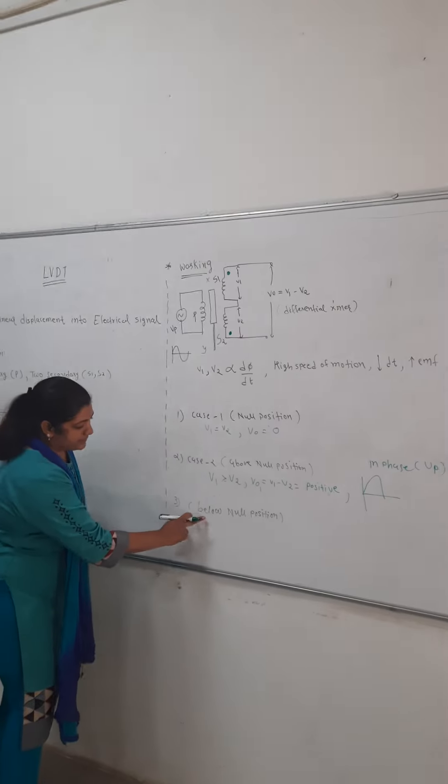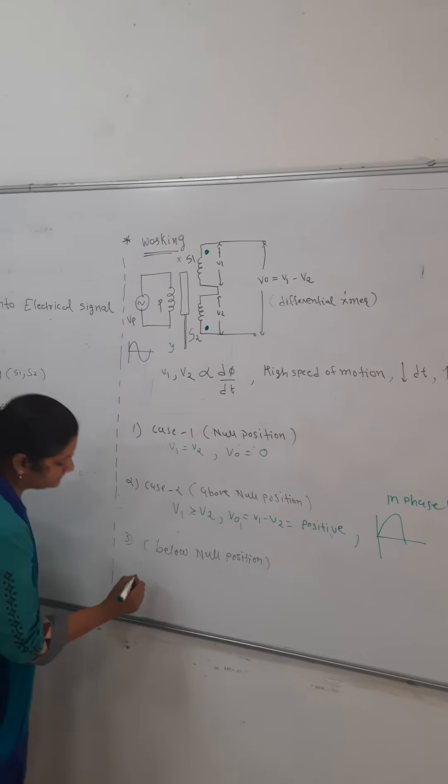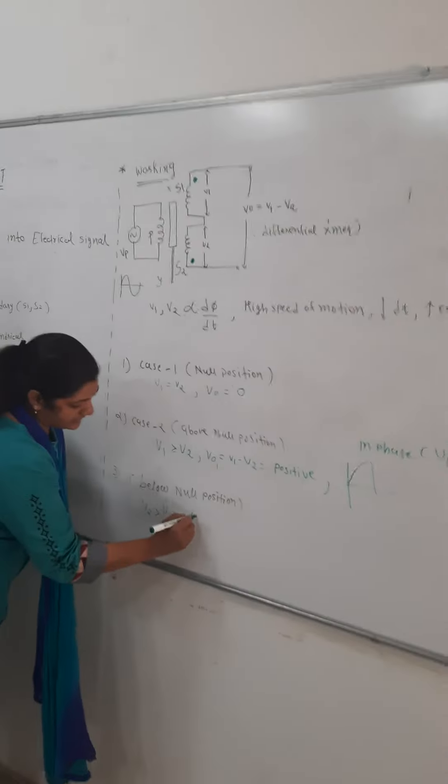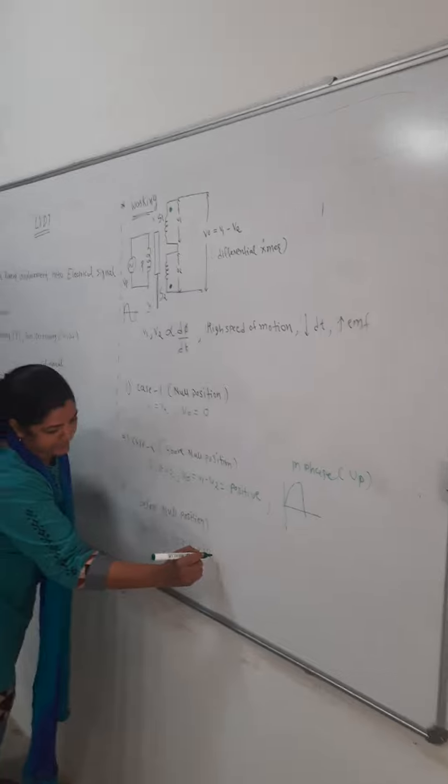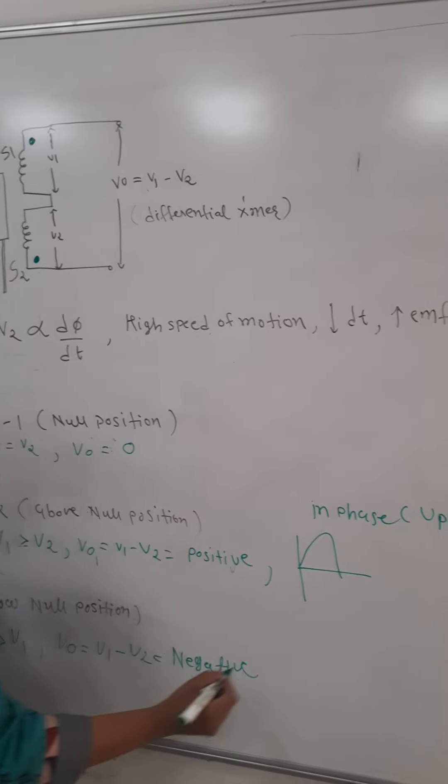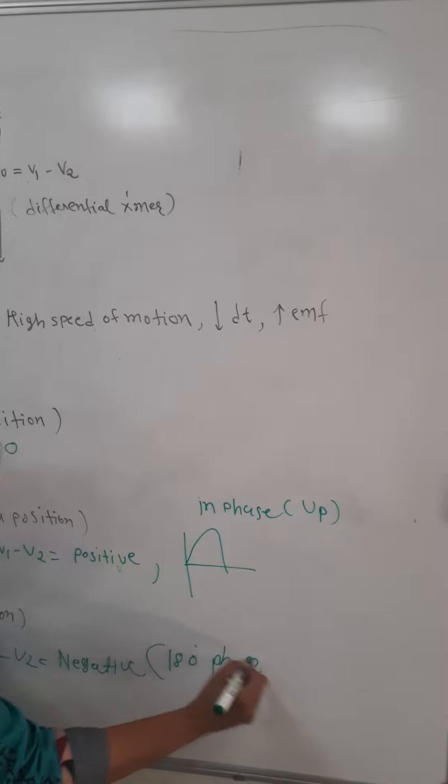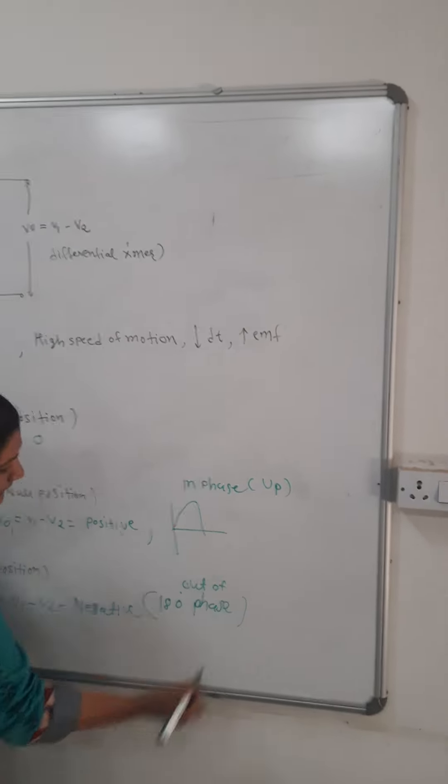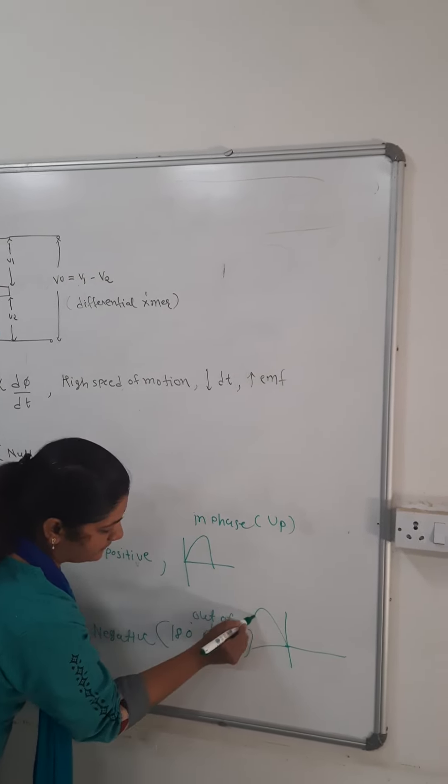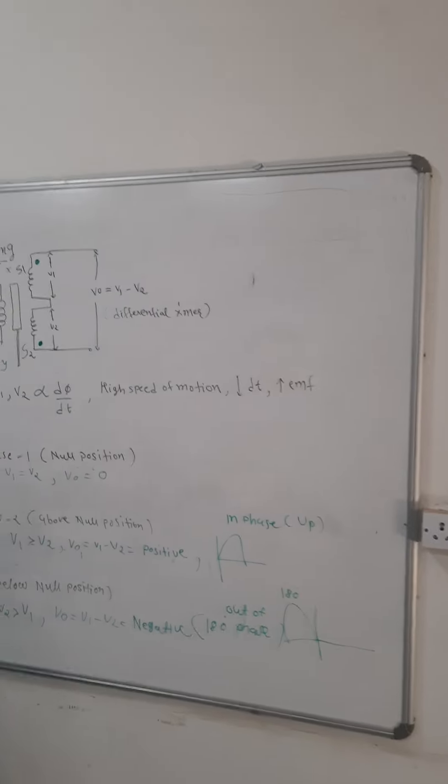Now, consider another case below null position. You can imagine that now the core is downside of the null. Same like the previous one. Now, V2 will be greater than V1. And V0 as per the formula V1 minus V2, we have a negative reading. Negative in the sense we can say that the output voltage will be 180 degrees out of phase. Or in phasor, we can say if this is our primary side, at 180 degrees, we have the V0 for case number 3.